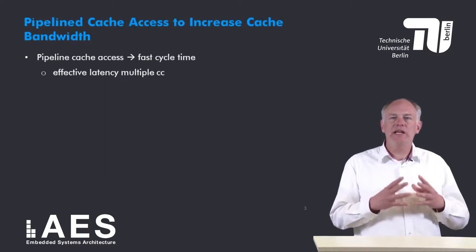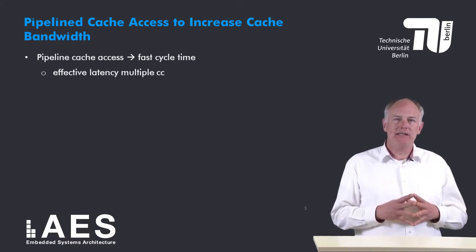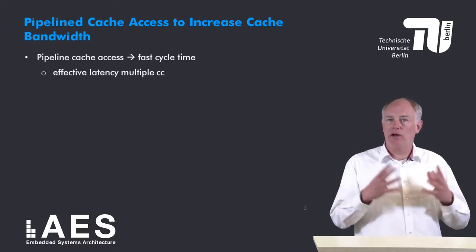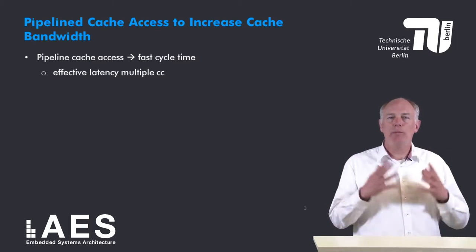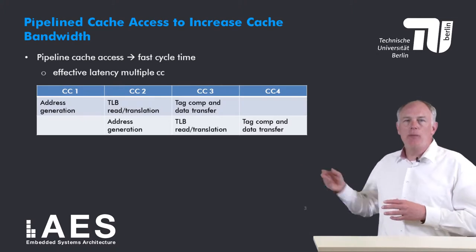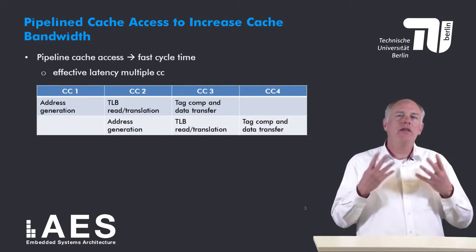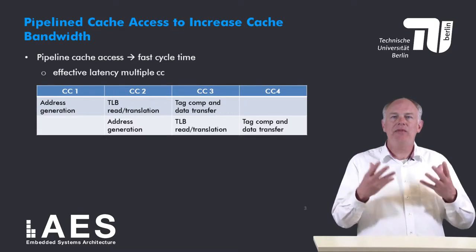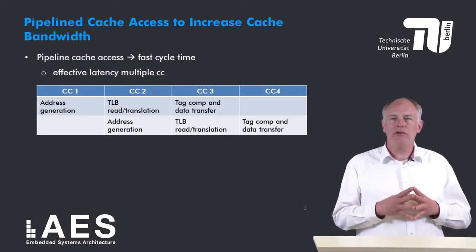The first technique to increase the cache bandwidth is to pipeline cache accesses. By pipelining cache accesses we can have a fast cycle time or equivalently a high frequency, but the latency of a cache access will be multiple clock cycles. In the first stage, the address is generated. In the second stage the TLB is read and the address is translated. Finally in the third stage the tags are compared and the data is transferred to the CPU.